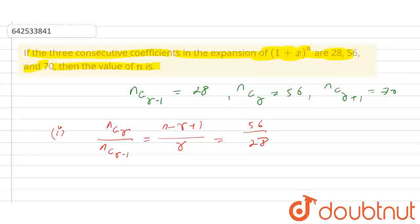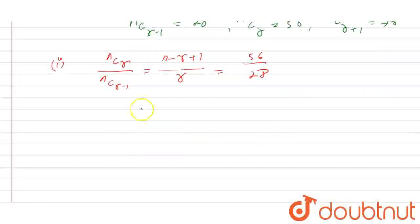So from here, what we get is n-r+1 = 2r. 28 cancels to give 2. So from here we get that n+1 = 3r.